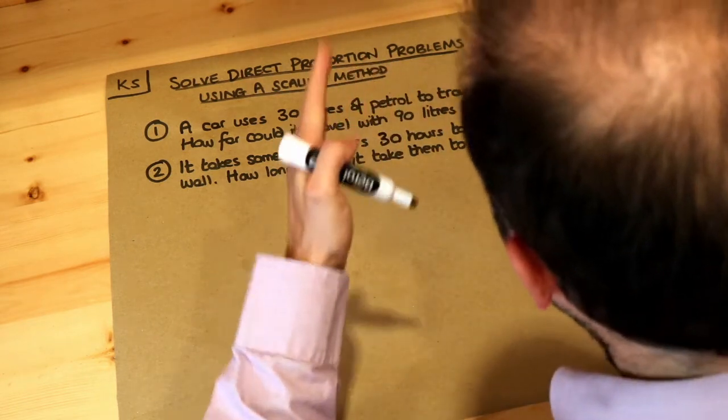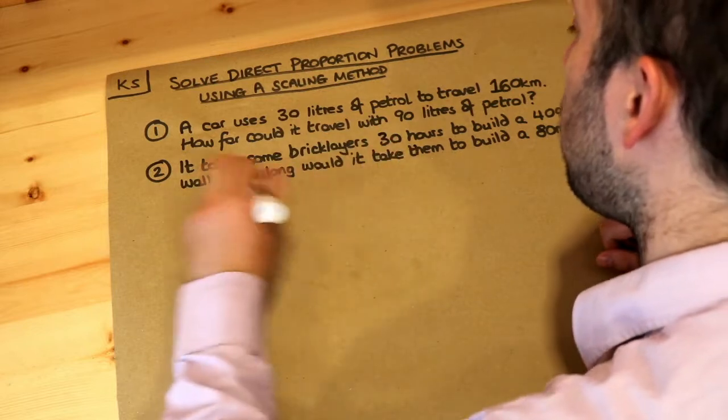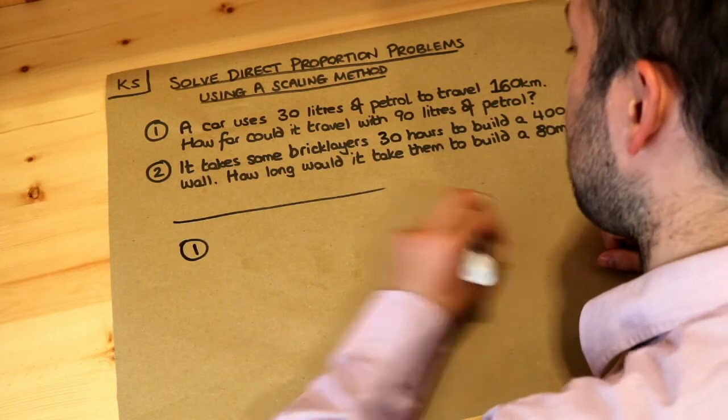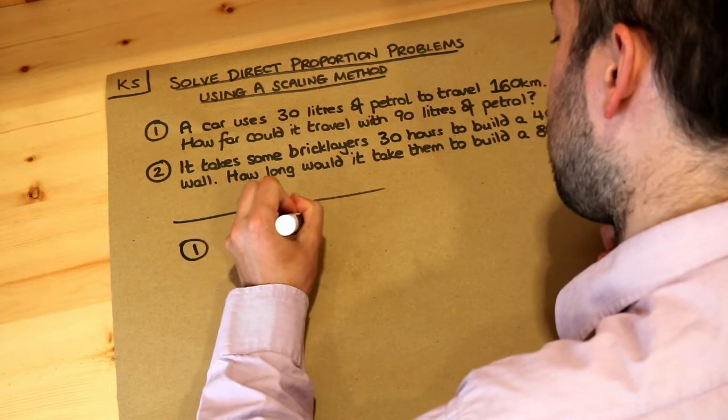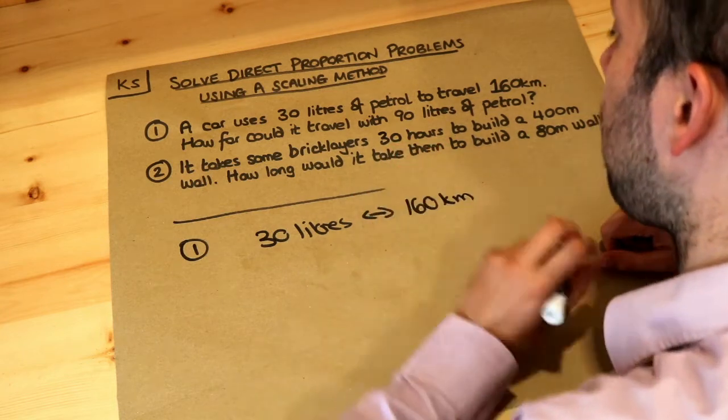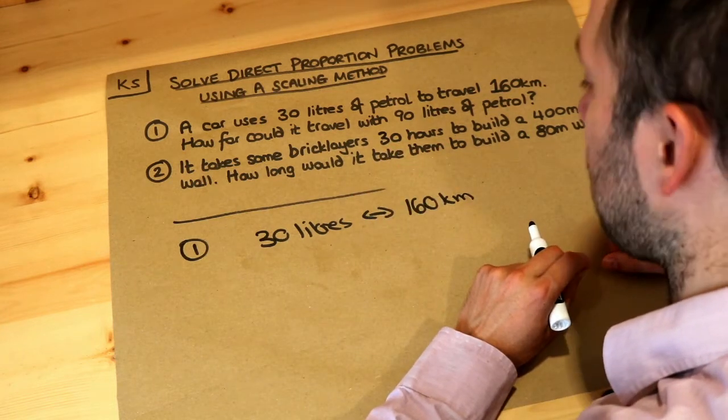So we can use that principle of scaling here. The car uses 30 litres of petrol to travel 160 kilometres. So let's write that: 30 litres, and I like to put a double arrow, 160 kilometres. How far would it travel with 90 litres of petrol?